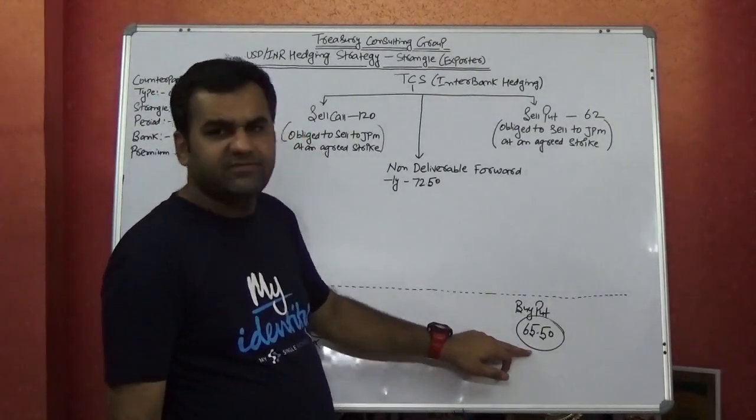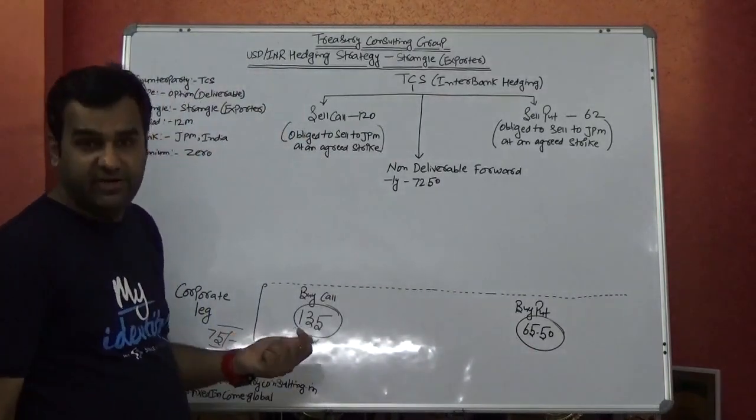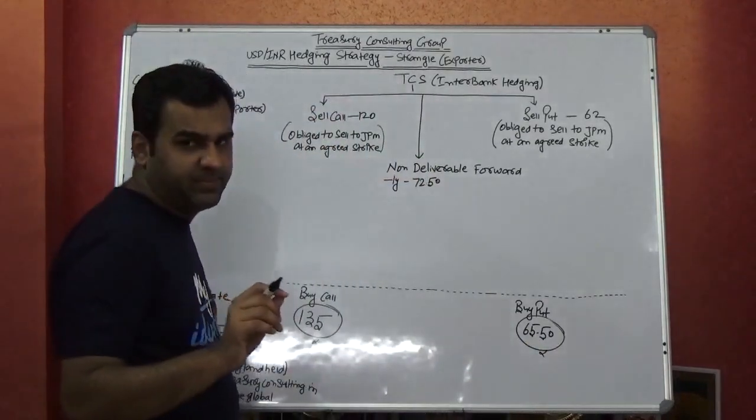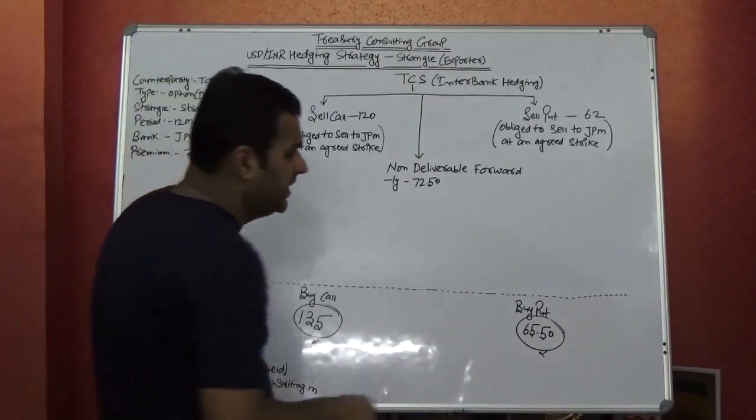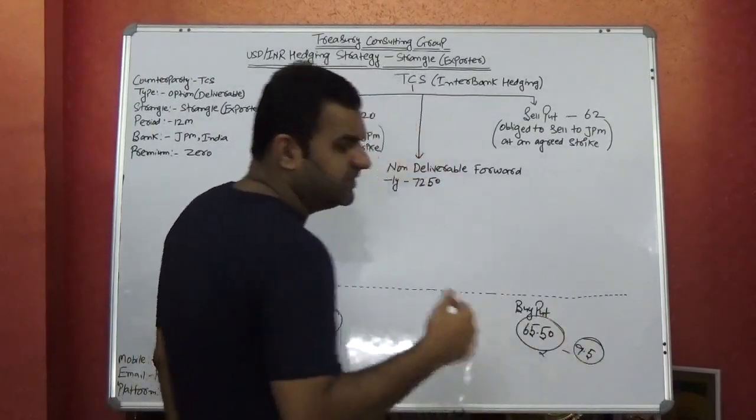Would TCS sell at 65.50 if the market is at 75? Definitely not. However, this will create a notional gain because TCS will sell in the market. This will create a notional gain of 9.5 rupees per dollar for TCS.